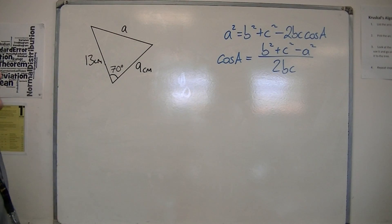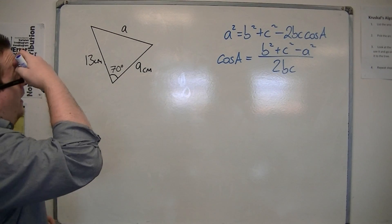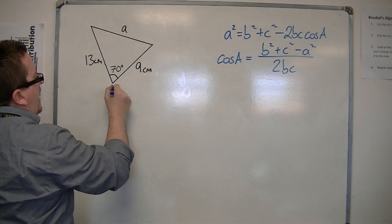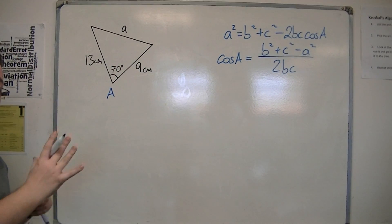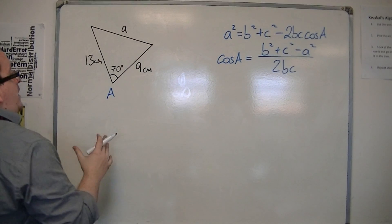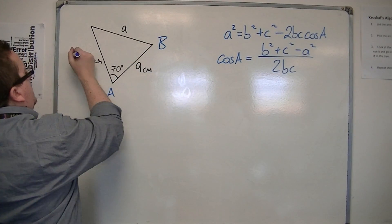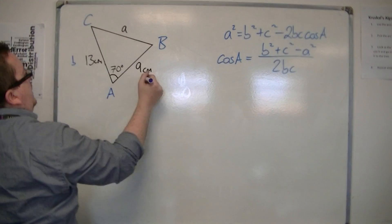So we're looking for a missing side here. So that's my a, so this is my capital A, using exactly the same notation that we use for the sine law. And we can call this b, so that could be little b, and that could be c, so that's little c.